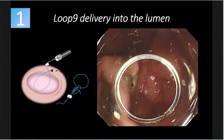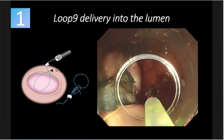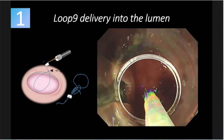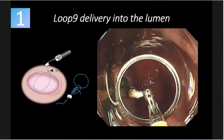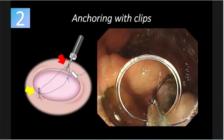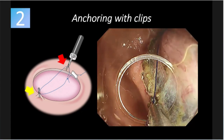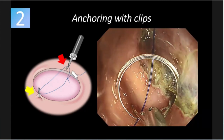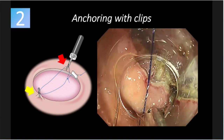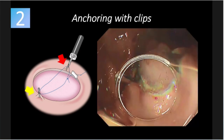Loop nine can pass through the working channel of a 2.8mm scope. We place the loop nine to the site. This is a re-openable clip. We try to catch one side together with one loop end — big bite. We can choose any clip.